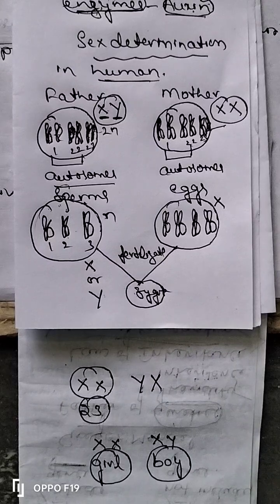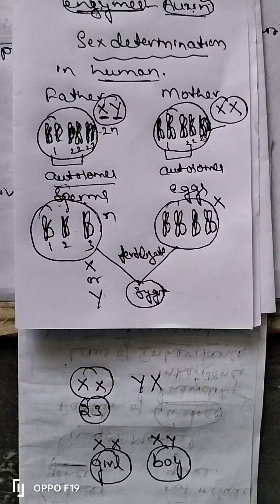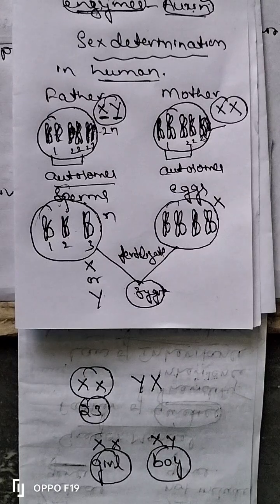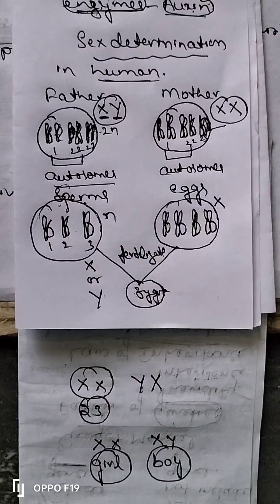The gender of the child depends 100% upon the chromosomes of the father — the gene of the father, the chromosome of the father. Because the mother will always have the same chromosome XX, but father will have XY chromosome. Father X combined with mother X gives a girl child. Father Y combined with mother X — then the child will be a boy child. Therefore, the gender of the child depends upon the chromosome of the father, not the chromosome of the mother.